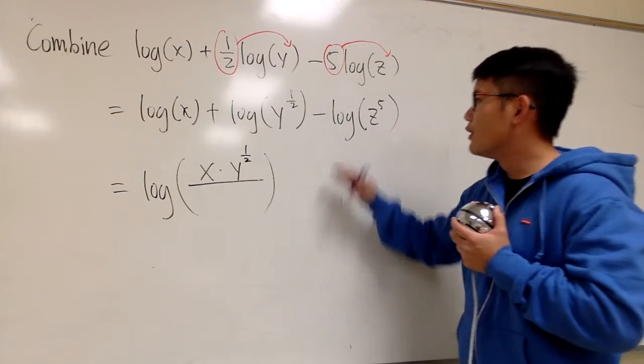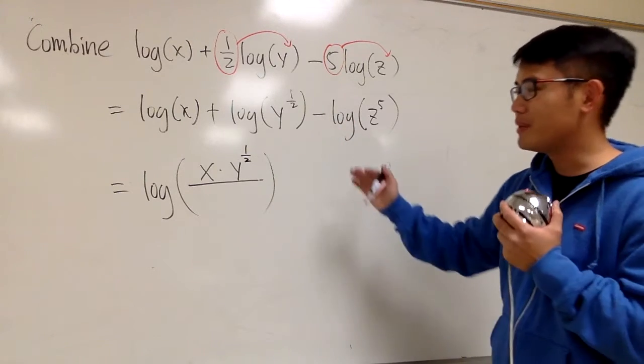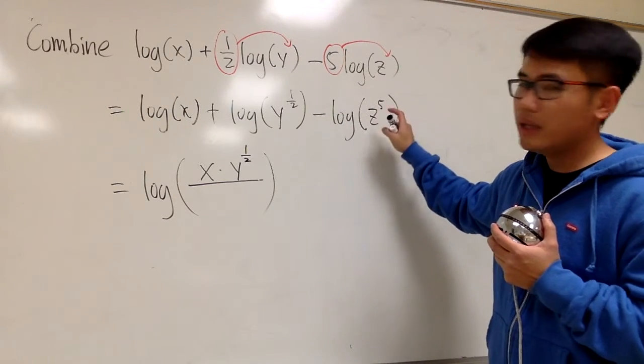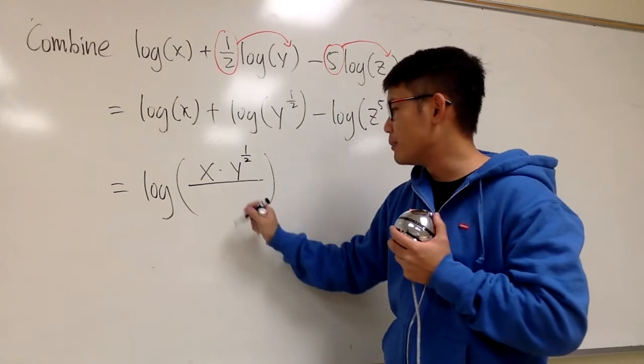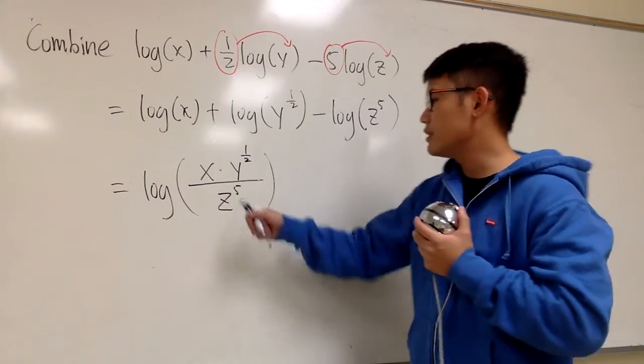And then, when you're subtracting, it's dividing. So z^5 will be going down to the denominator. When you subtract, put this down in the denominator.